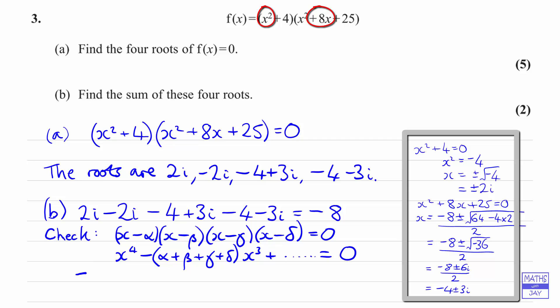So comparing coefficients of x³, we know that -(α + β + γ + δ) must be equal to 8. In other words, the sum of the roots, which is α + β + γ + δ, must be -8. In other words, we were correct.